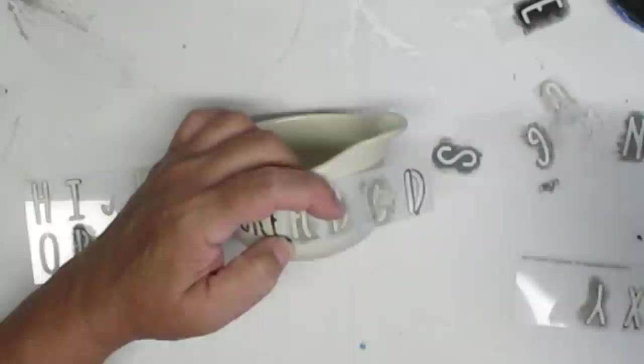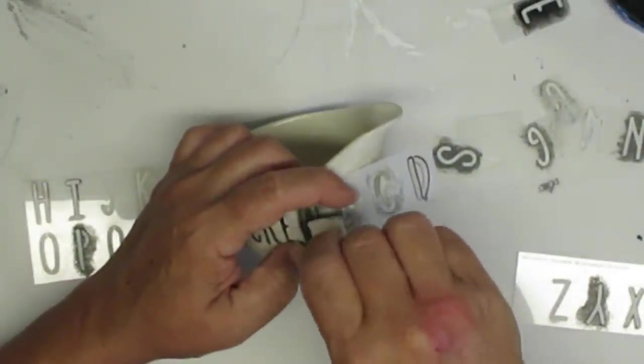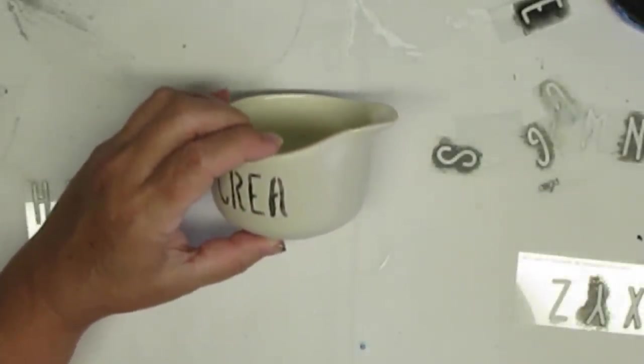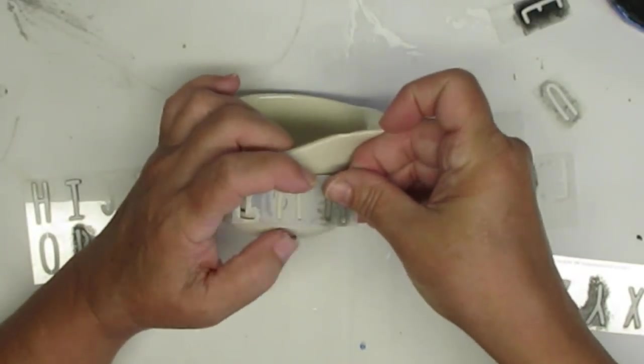The last thing I'll do is give them a clear coat of matte sealer. I usually use a spray paint but you can also use Mod Podge and that will just prevent anything from chipping. I really love how they look so old-fashioned and vintage.